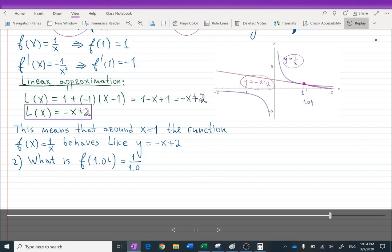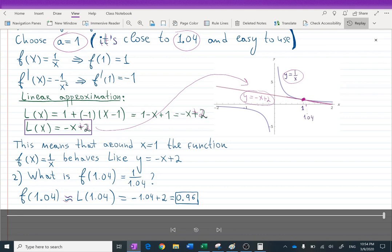So if they ask us to calculate 1.04, why would we use a hard function then? Let's use a linear one. And that gives us the approximation, that's why the curly equals sign. And the approximation is 0.94, negative 1.04 plus 2, we're using this approximation. And the approximate result is 0.96.